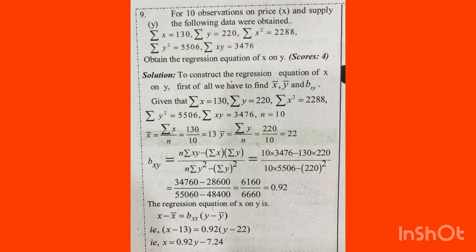We apply the formula: bxy equals sigma xy minus sigma x into sigma y divided by n, all over sigma y squared minus sigma y whole squared divided by n. Substituting all the given values, bxy works out to 0.92. The regression line of x on y is given by x minus x̄ equals bxy into y minus ȳ. Substituting, with bxy equal to 0.92 and ȳ equal to 22, the equation becomes x equals 0.92y minus 7.24. Thank you.